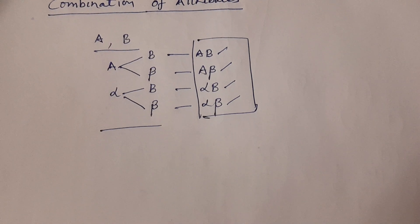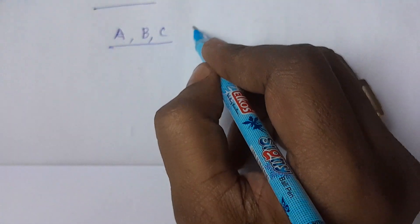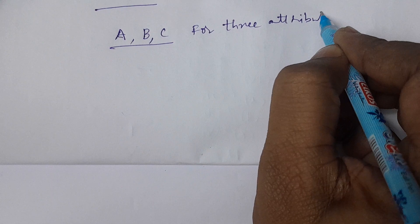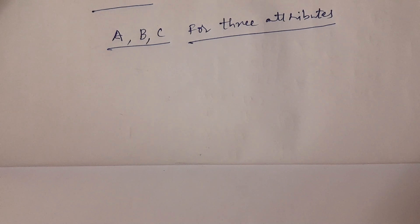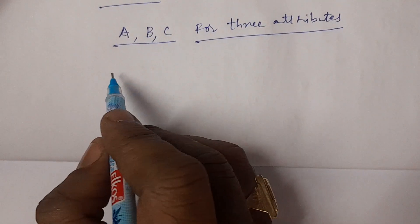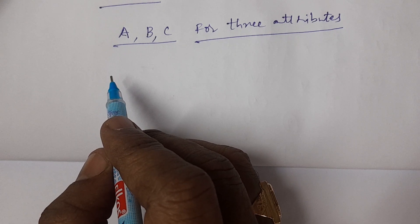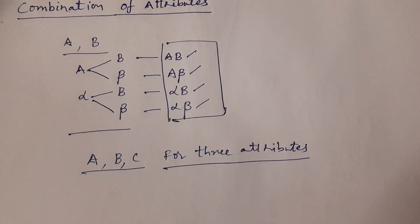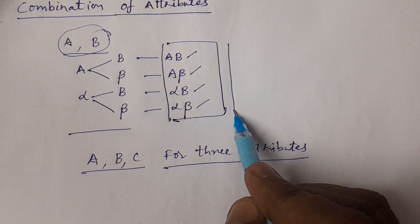Similarly, for example, if you have three attributes — let them be A, B, and C — what would be the combinations? You have to consider the two-attribute combinations first, and then the combination with another attribute is going to be considered. Already we have considered the combination of A with B for two attributes; these are the total combinations.